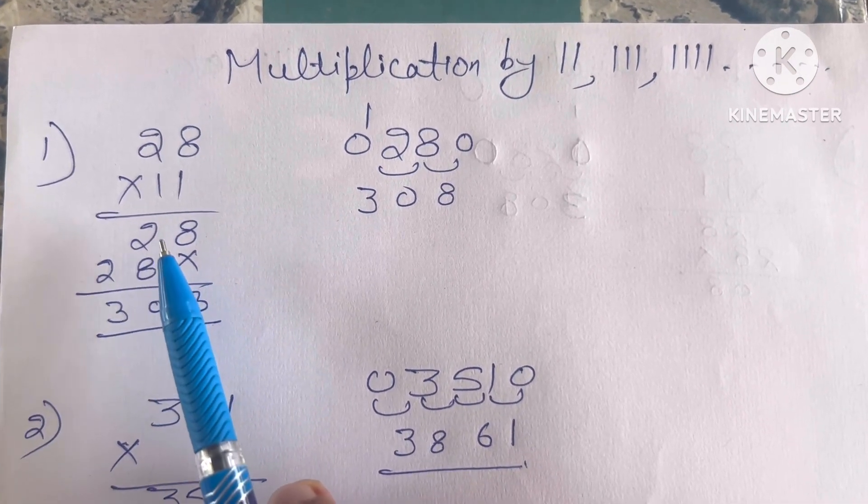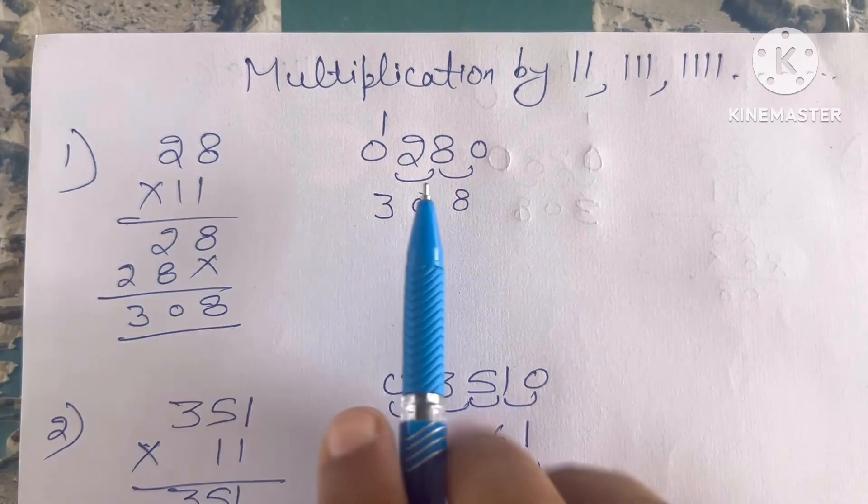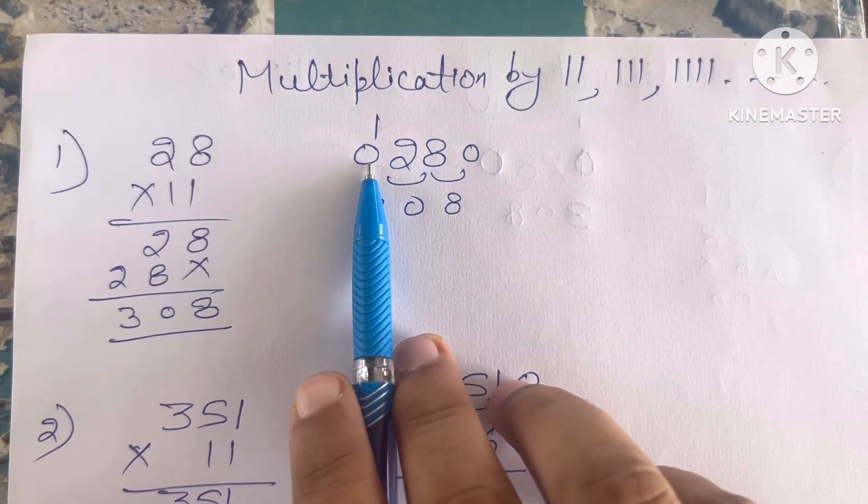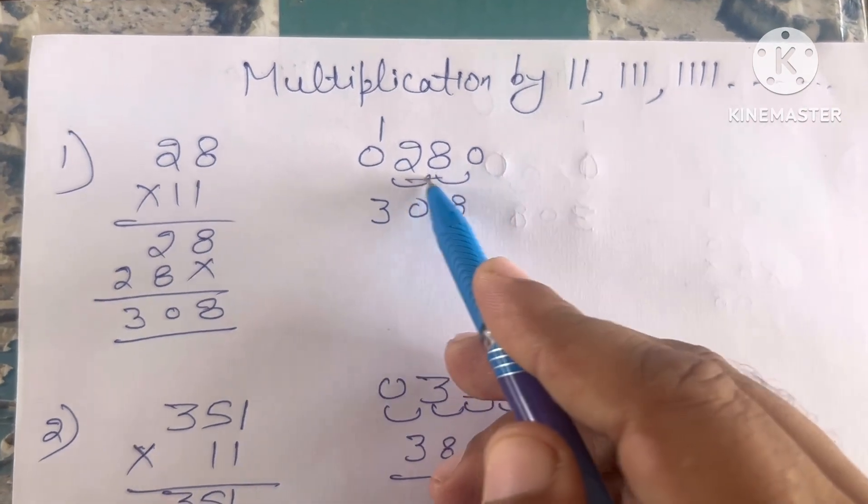If you want to multiply by 11, you have to put 10 this side and 10 this side of the given number.